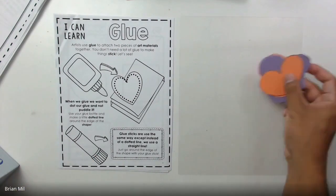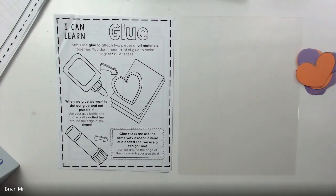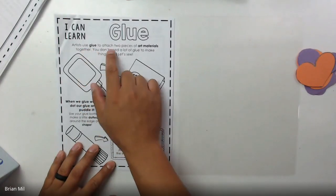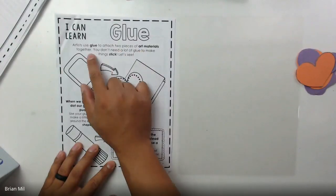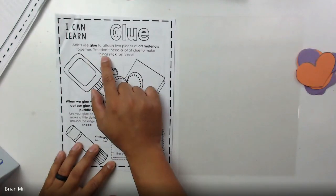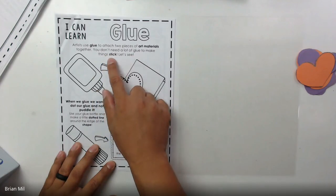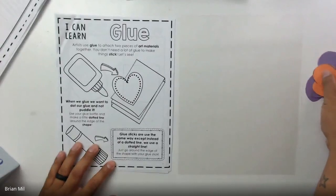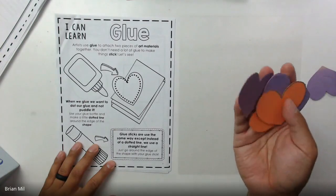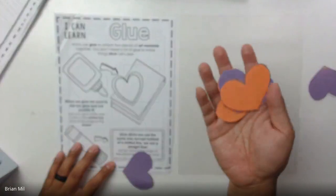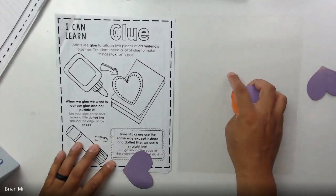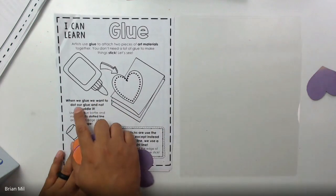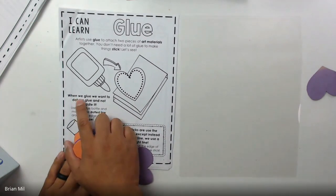Let me just read this off to you guys. I have a piece of plastic paper here along with some hearts to explain how glue works. Glue: artists use glue to attach two pieces of art materials together. You don't need a lot of glue to make things stick. I have some hearts here and I'm going to be gluing them inside this little plastic sheet because I want to show you guys what glue does.